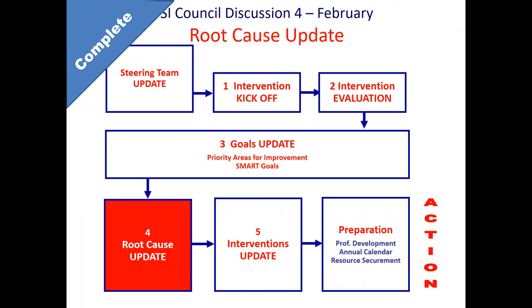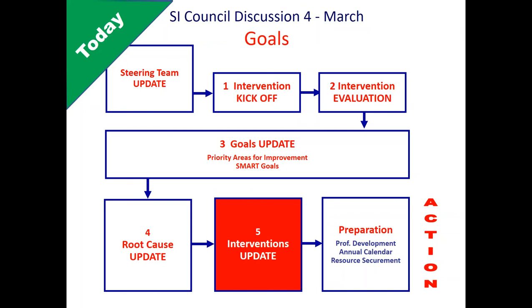Now that we know what's getting in the way, this month we want to update your interventions. There may be some interventions you no longer need because they've already fixed the root cause. There may be others that you thought were going to be great but didn't bring about the results you wanted. Some may have been wonderful and you're deciding to continue them exactly as written, or continue but revise them. We'll also look at adding possibly new interventions if you need them. At the end of this discussion, your steering team will have the information they need to create a list of interventions for next year.